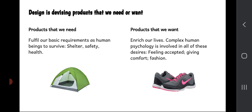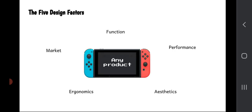So if that's what product design is, then what are these five factors of design? Well, it's these things here: function, performance, aesthetics, ergonomics, and market. We can use these design factors to discuss any product in the world. We can use these factors to explain our own ideas and our own products, and we can use them to evaluate existing products or coming up with new ones as well.